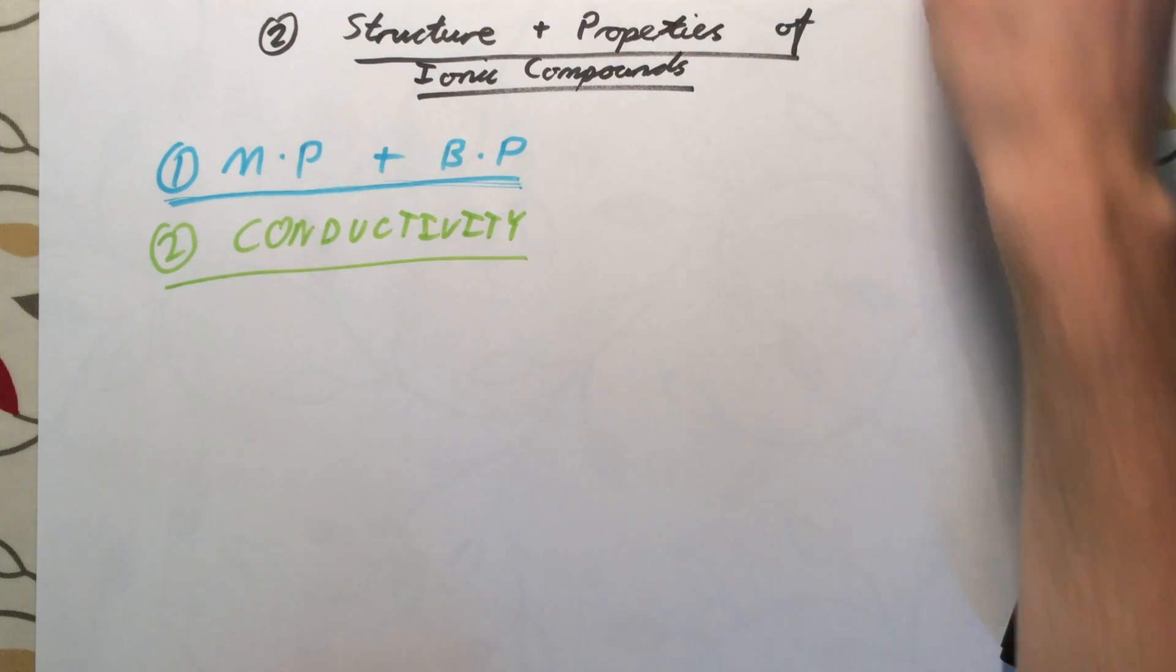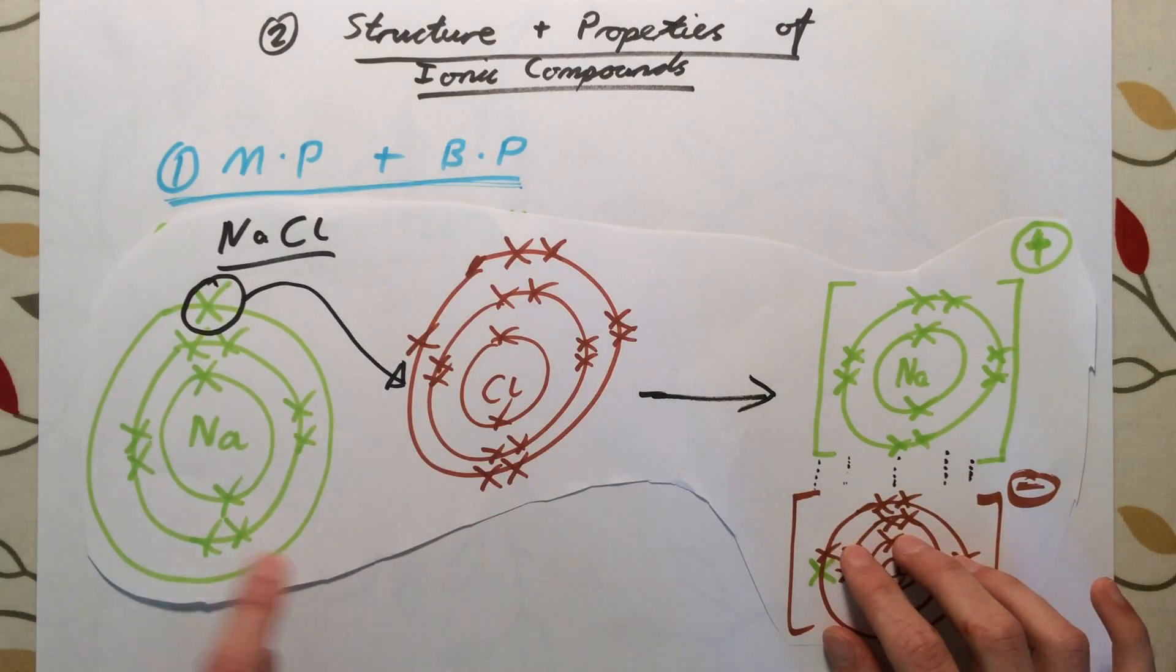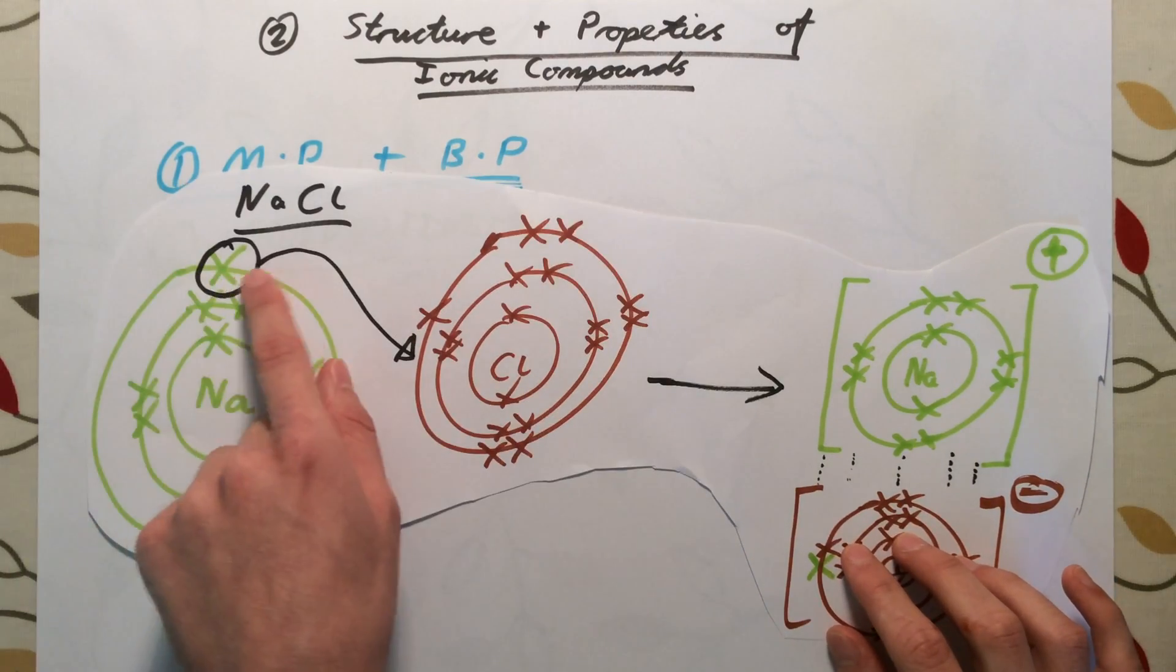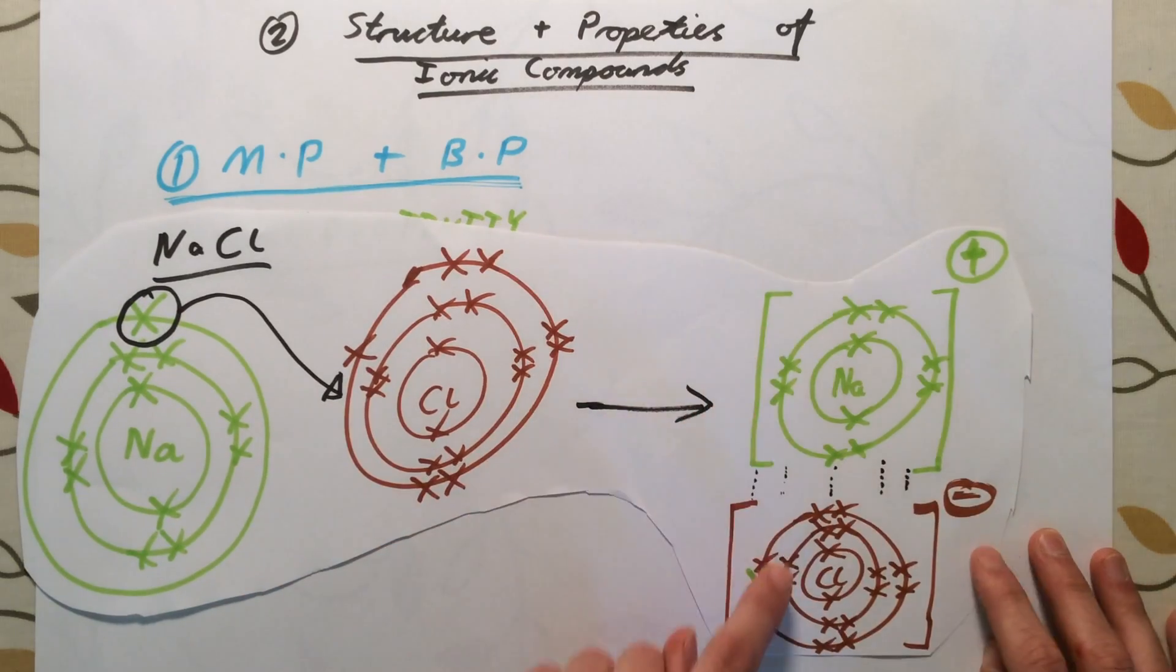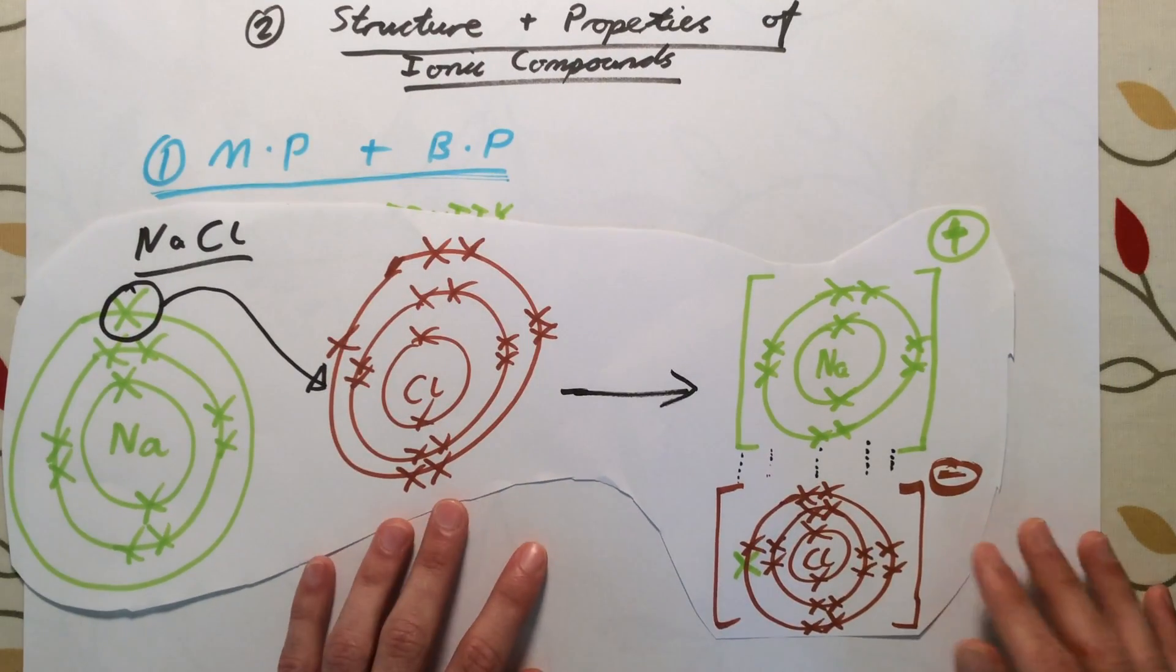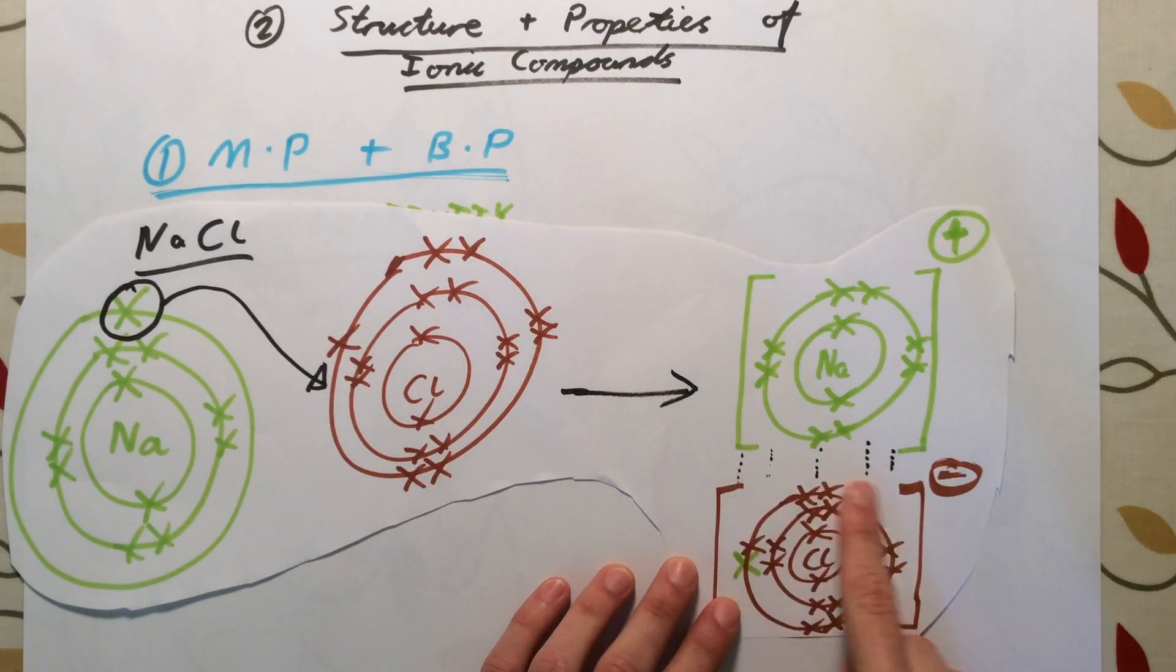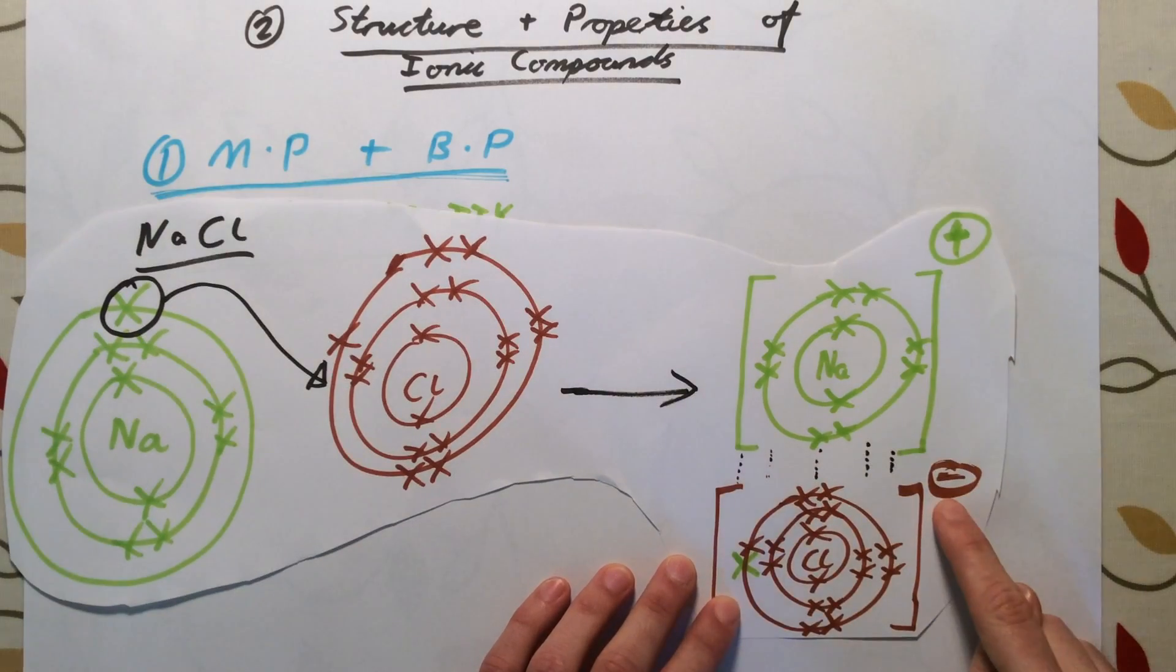We said in the first video that if we have a metal and non-metal, for example sodium and chlorine, the metal will transfer one or more electrons to the non-metal, forming a positive metal cation and a negative metal anion. These ions are held together by the strong force of attraction, or the electrostatic attraction, between positive and negative ions.